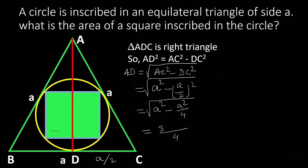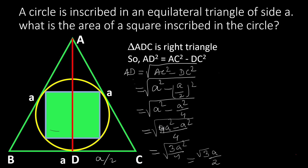Taking LCM as 4, we get (4A² − A²)/4 under the root, which simplifies to 3A²/4 under the root. That is equal to √3A/2. So the median AD = √3A/2.